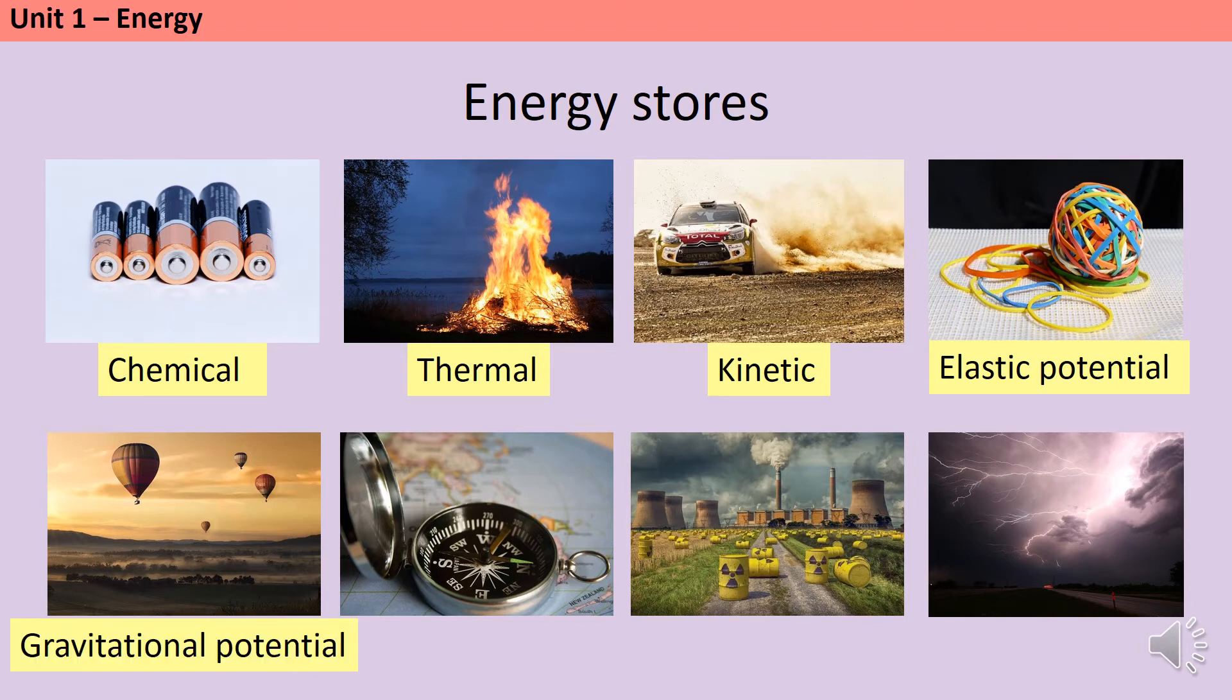Magnetic objects that are either in or near a magnetic field store energy magnetically. The nucleus of atoms, particularly radioactive metals like uranium and plutonium, are a store of nuclear energy. And finally, when you place two charged objects, like a balloon you've rubbed on your hair, near to each other, they store energy electrostatically. Lightning occurs when electrostatically charged particles discharge.